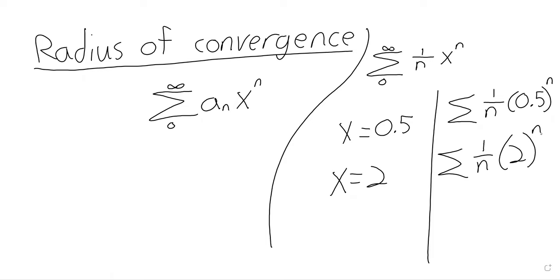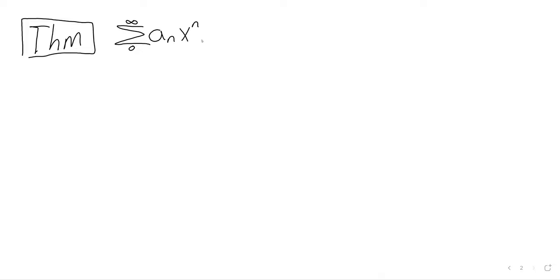So the question then becomes: for what values of x does a power series converge? I'll state it as a theorem. Suppose we have a power series. Then it converges — well, the way I've written this power series, there are only three options.